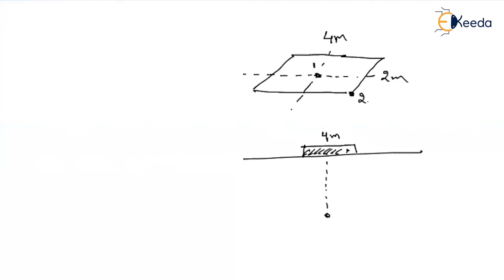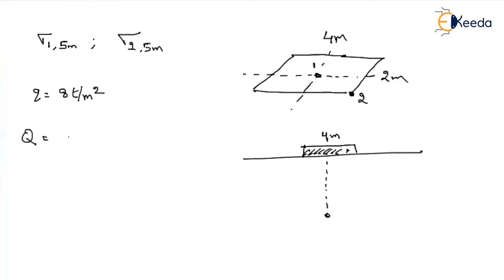Let me assume the corner is point 2. I want to find stress at point 1 at a depth of 5m. Similarly, I have to find stress at point 2 at a depth of 5m. The intensity Q equals 8 tons per m². This load is distributed throughout the area. The total load equals intensity times area: 8 times 4 times 2, which equals 64 tons. This acts at the CG, which is directly at point 1.